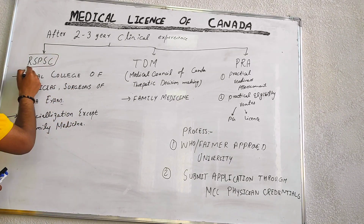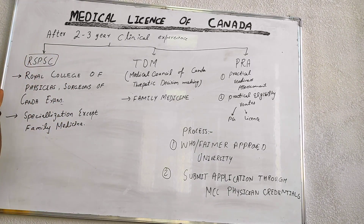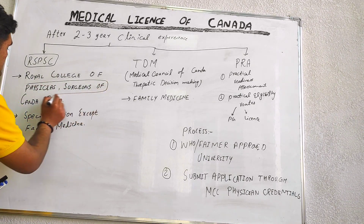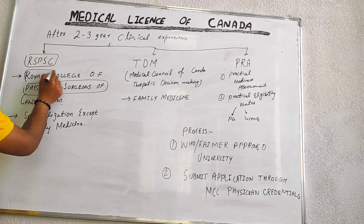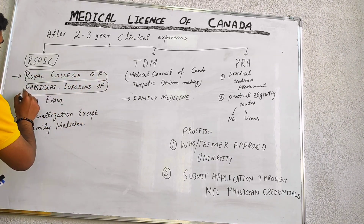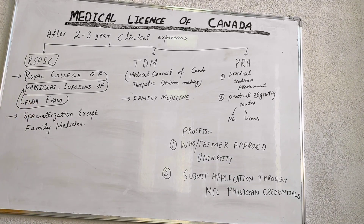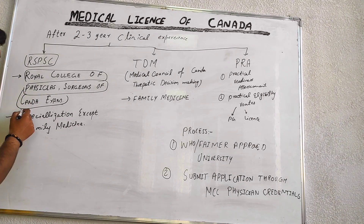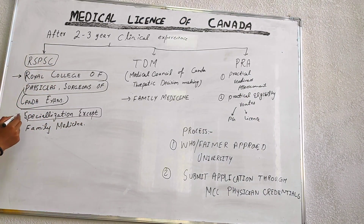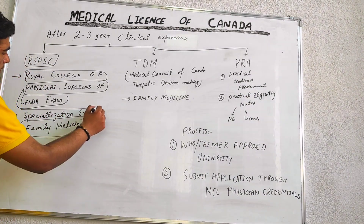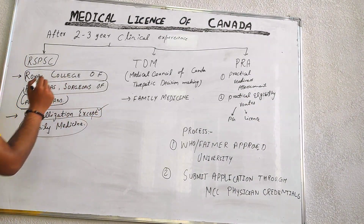The first pathway is RSPSC, the Royal College of Physicians and Surgeons of Canada. You have to get affiliation by passing the exam of the Royal College of Physicians and Surgeons of Canada, and you can do specialization in any field except family medicine through this pathway.